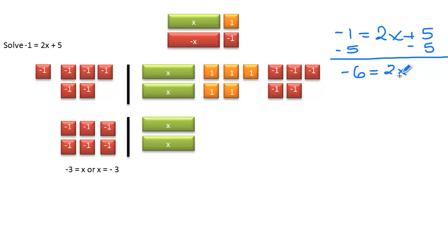Now we still want to get a positive 1x and 2 is being taken times it. The opposite of multiplying by 2 is dividing by 2. But to be fair, if we're dividing the right-hand side by 2, we have to divide the left-hand side by 2. And a negative 6 divided by a positive 2 is a negative 3. And 2x divided by 2 is a simple 1x. So negative 3 equals x or x equals negative 3.